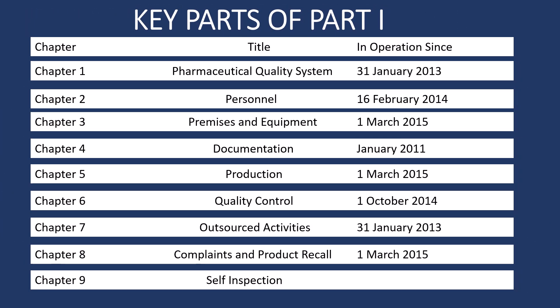The key parts of Part 1 can be divided into 9 chapters. Chapter 1 is for pharmaceutical quality system. Chapter 2, personnel. Chapter 3, premises and equipment. Chapter 4, documentation. Chapter 5, production. Chapter 6, quality control. Chapter 7, outsourced activities. Chapter 8, complaints and product recall. Chapter 9, self inspection.